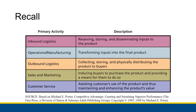I also want to briefly review the primary activities of a value chain, which we talked about in chapter two under Porter's model. The primary activities are going to be inbound logistics, which is about taking whatever inputs you're going to use, receiving them, storing them, and disseminating them throughout the organization wherever those need to go.